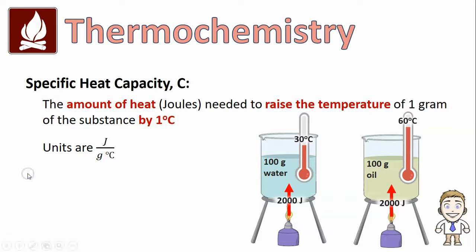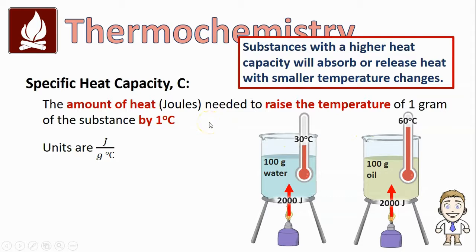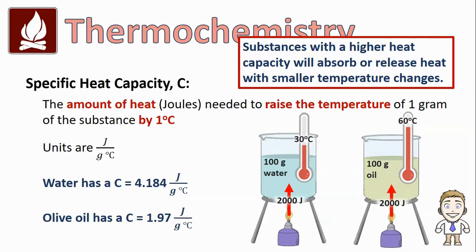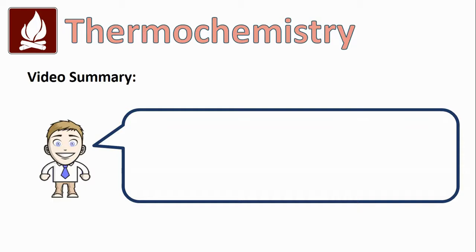Let's wrap this up by applying our statement about heat capacity to the oil and water example. Substances with a higher heat capacity absorb or release heat with smaller temperature changes. Water has a specific heat capacity of 4.184 joules per gram degree Celsius, whereas olive oil only has a specific heat capacity of 1.97. Water's heat capacity is much higher than oil's, and that's why the water only went from 25°C up to 30°C. The oil, with a lower heat capacity, absorbed the same 2,000 joules but with a much larger temperature change. And that about wraps it up for this video on heat capacity.